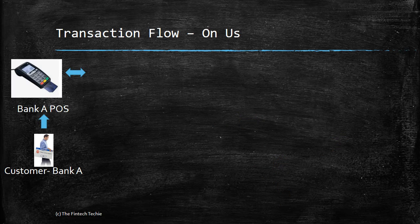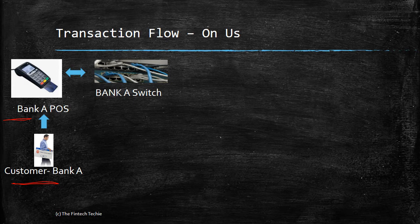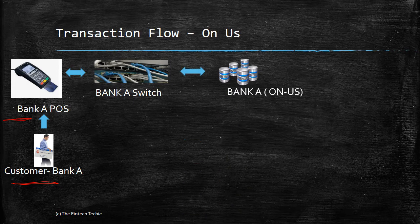Let's look at the transaction flow and how it differs from ATM. In the first scenario, a customer of Bank A goes to a merchant whose POS machine is also owned by Bank A. Bank A is both the issuer (the customer's card) and the acquirer (owns the POS). The merchant also has an account with Bank A. The customer swipes for 1000 rupees, the request goes to Bank A's switching software, then to Bank A's CBS. This is an on-us transaction.